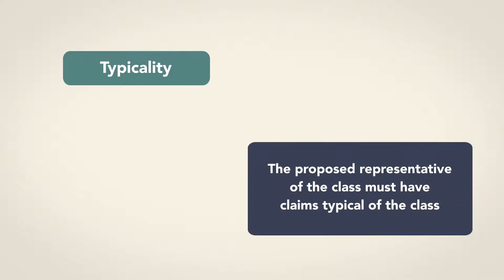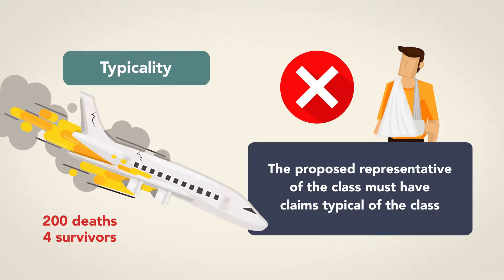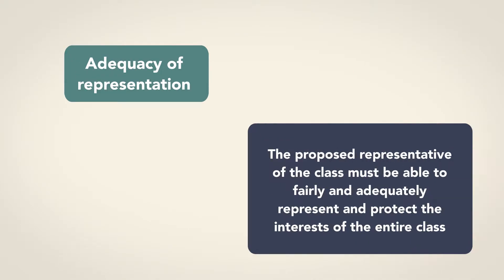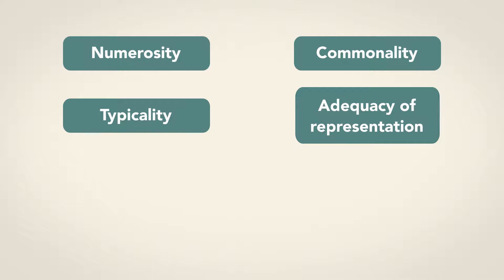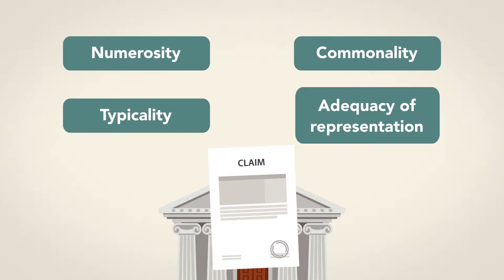Typicality means that the proposed representative of the class must have claims typical of the class. For example, if a plane crash caused 200 deaths and had four survivors, it would be inappropriate to have a survivor represent the class as his claim is atypical of the class. Adequacy of representation means that the proposed representative must be able to fairly and adequately represent and protect the interests of the entire class. These last two requirements focus on how well the lawyers who bring the claim and their clients, the named plaintiffs, will serve the role of class representative. Passing the four tests, however, is just the first step — the court must next find that there is a reason the case should not be separated out into individual lawsuits.